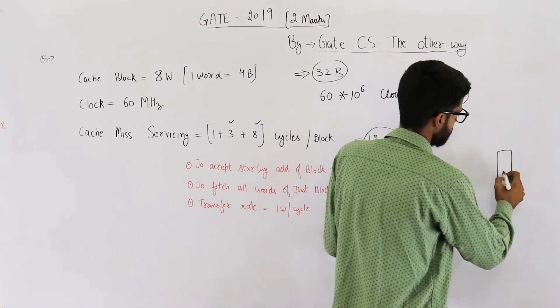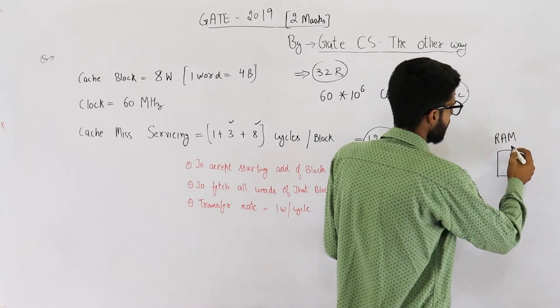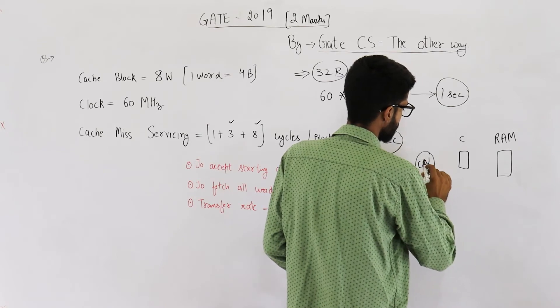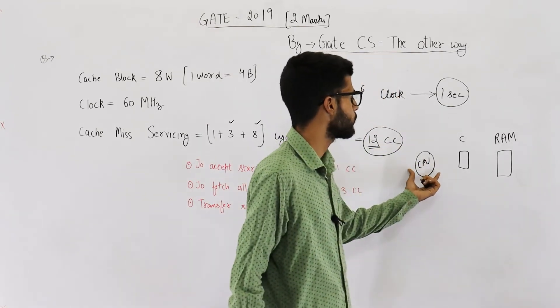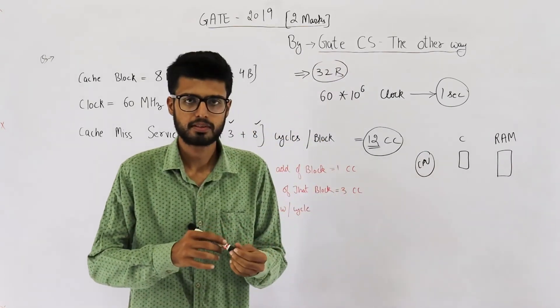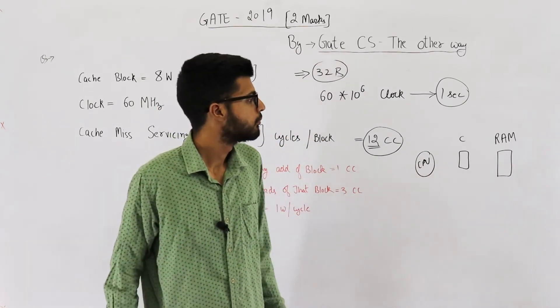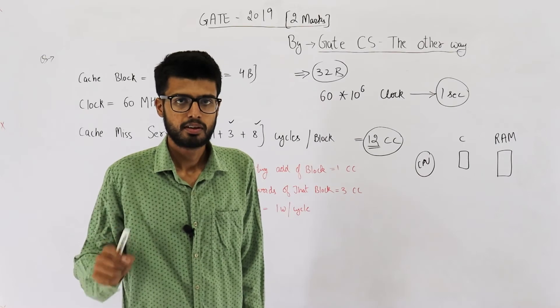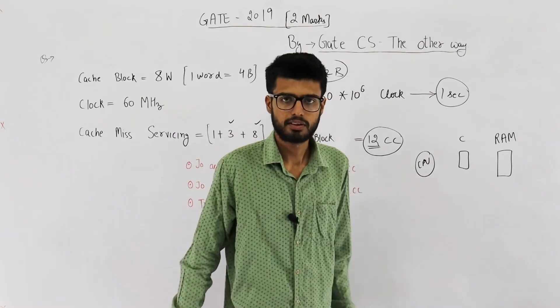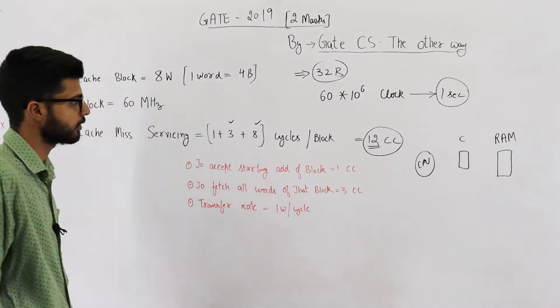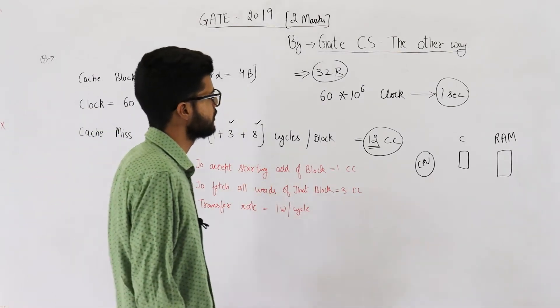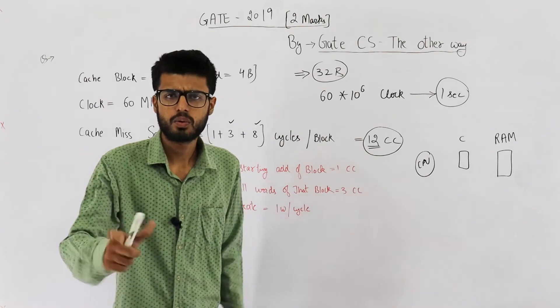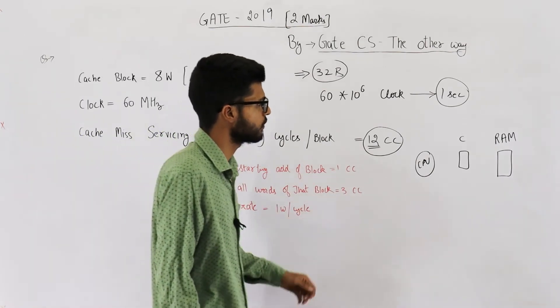Say, this is your RAM or primary memory. This is cache. And this is CPU. If they are talking about bandwidth at which CPU can access the memory system, then the word must be minimum. But if they're talking the bandwidth at which RAM will transfer the data, then maximum is okay. Then question is correct. But we're not sure. We cannot assume anything unless it's mentioned in the question. So, just let's make an assumption. 12 clock cycles are required to transfer one block. Let's solve the question according to this assumption.